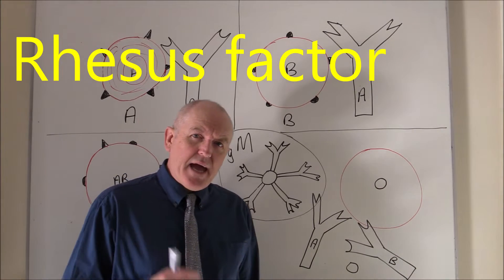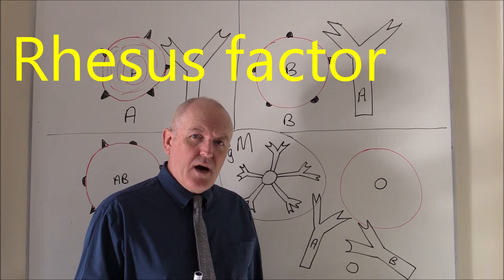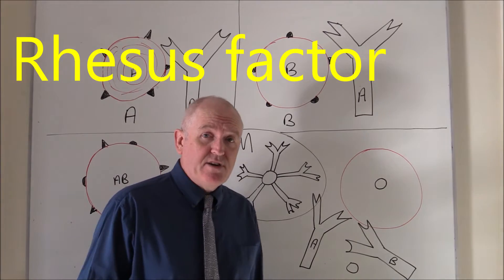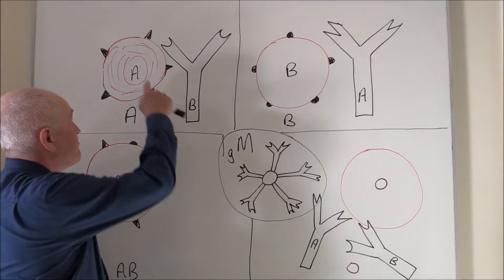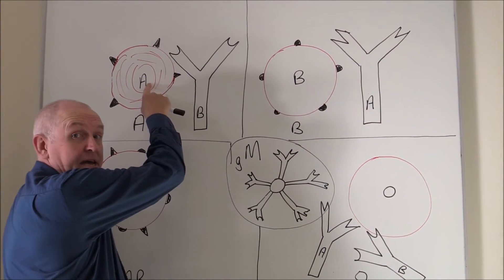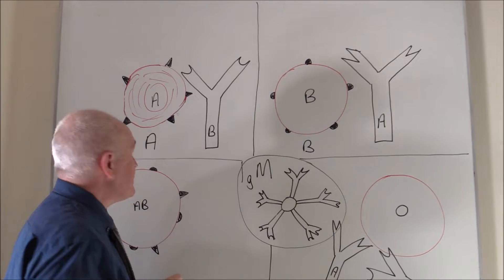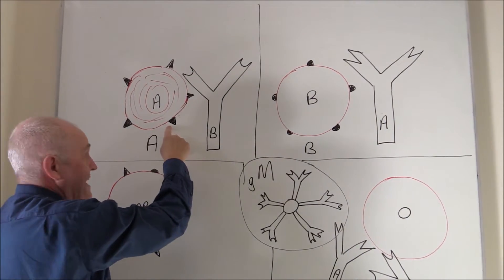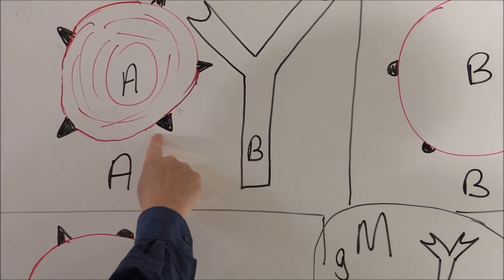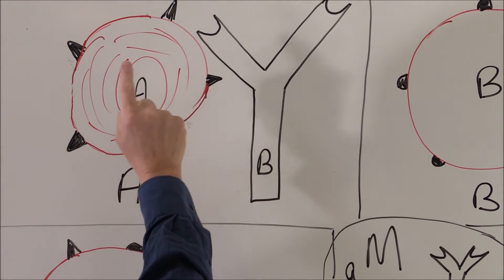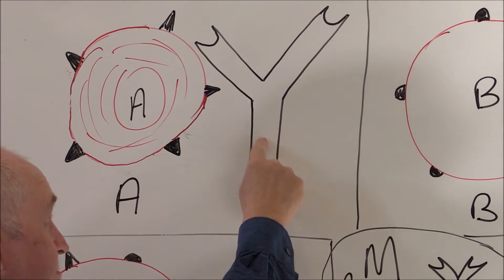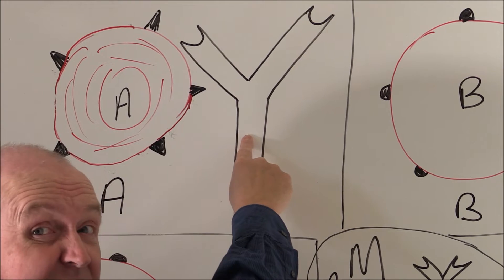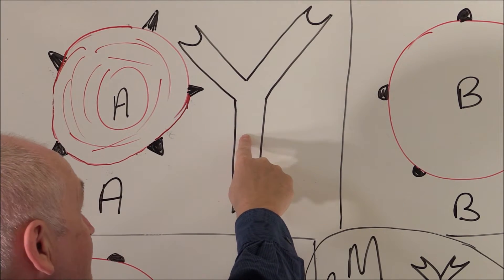Now we've looked at the ABO system and I'm just going to recap that very briefly now. So here we have blood group A, and the blood group is determined by the red cell. So this has A antigens. But if someone is blood group A, they're going to have B antibodies, or anti-Bs, in their plasma.